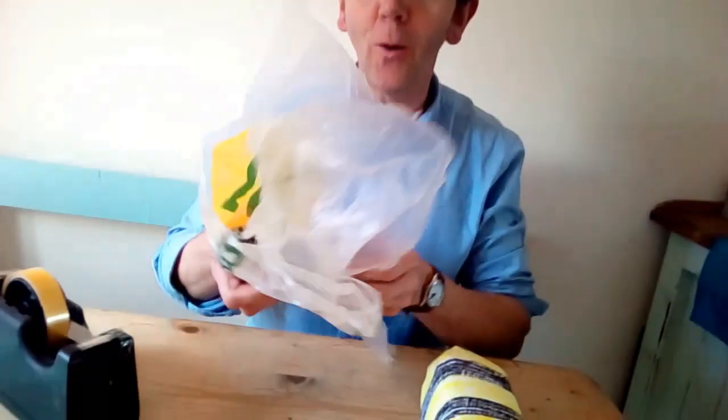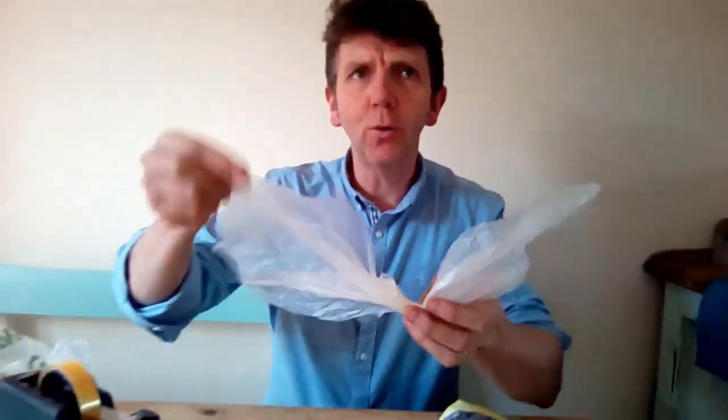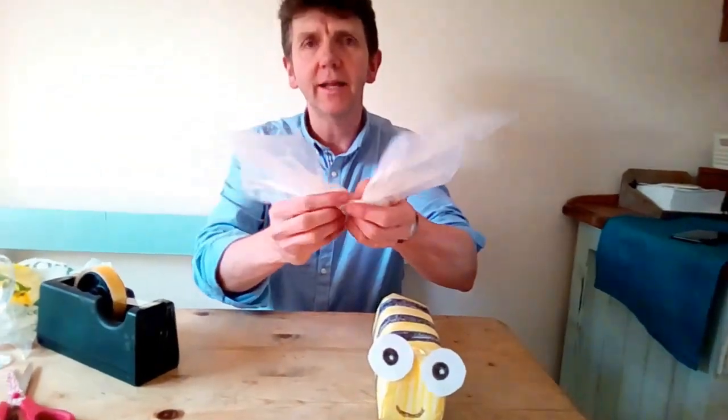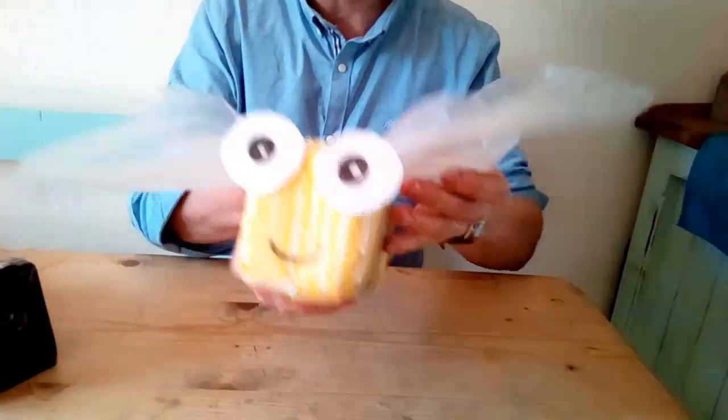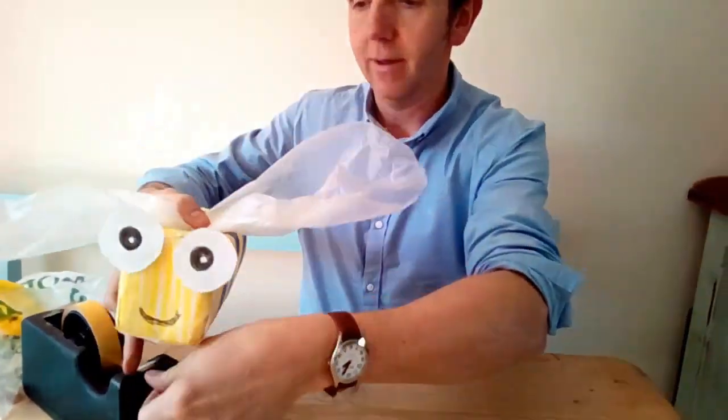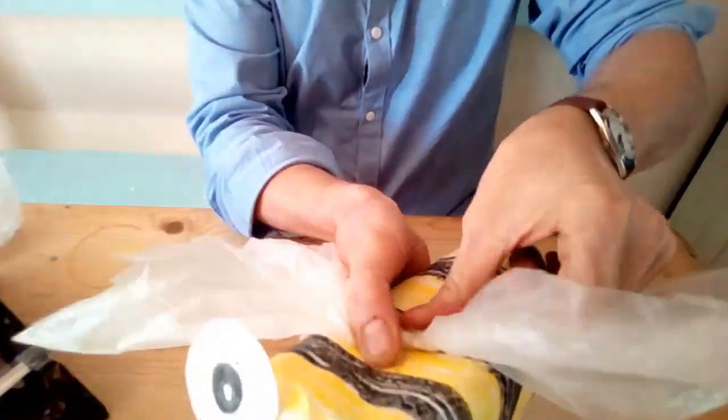For the wings, I've used an old carrier bag and I've cut out the clear bits. So I'm going to put them into two kind of balloon shapes and then cello tape them together. And we just tape them onto the back. Like this. Here's our buzzy bee.